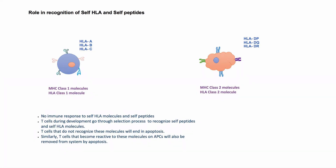During further development, T cells are presented with these molecules on antigen presenting cells, and if T cells become reactive to these molecules, they will be removed from the system by apoptosis. So only those T cells that recognize self HLA and self peptides but do not become reactive to these molecules will be selected for further immune functions.